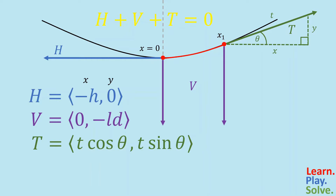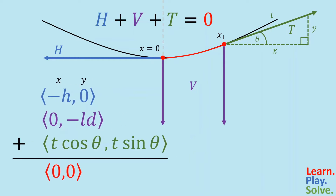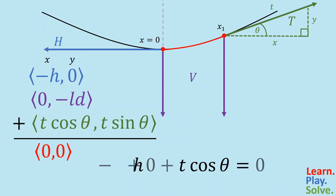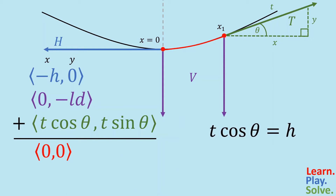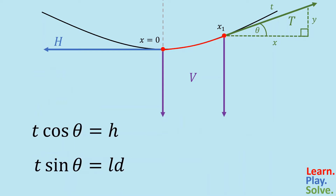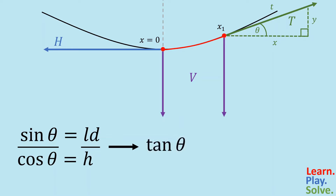Remember, the sum of these three vectors is 0. Adding the x components: negative h plus 0 plus t cosine theta equals 0, which simplifies to h equals t cosine theta. Adding the y components: 0 minus ld plus t sine theta equals 0, which simplifies to ld equals t sine theta. Dividing these equations, the t's cancel out, leaving sine over cosine, which is tangent by definition. The slope of the tangent at x1, or any point on the curve, is the derivative dy/dx.